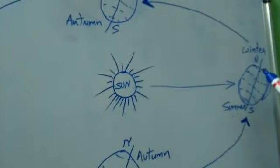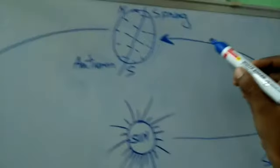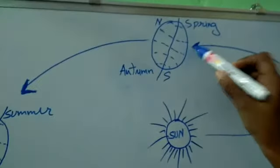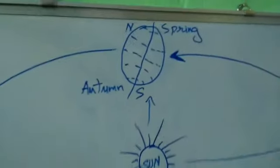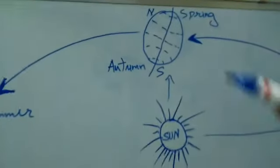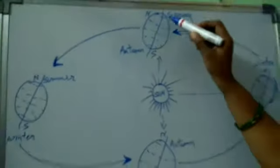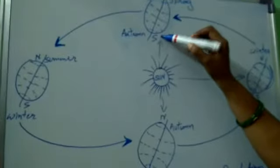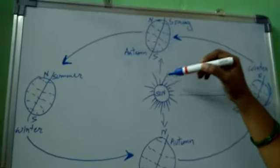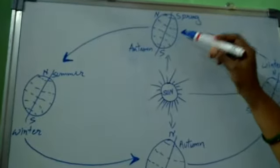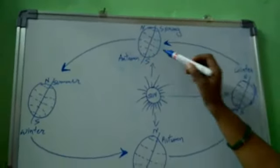Now it moves and turns here. This area is closer to the sun and this side is also at the same distance. So here both the southern and northern sides are equally facing the sun. That's why spring and autumn seasons occur at this position.